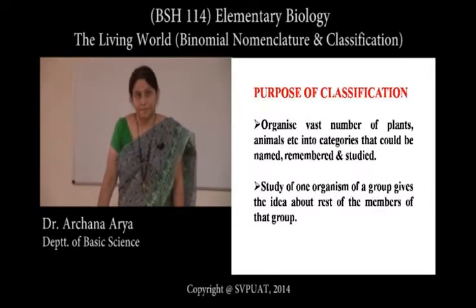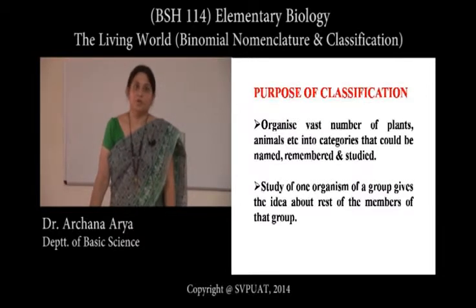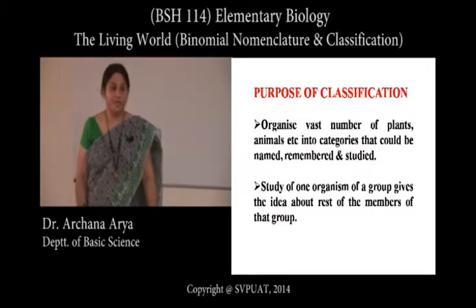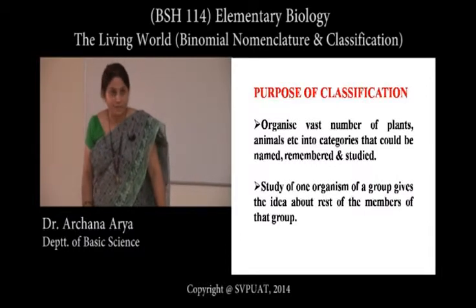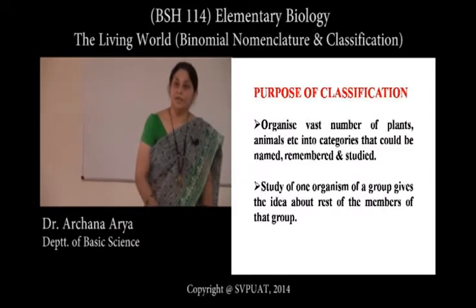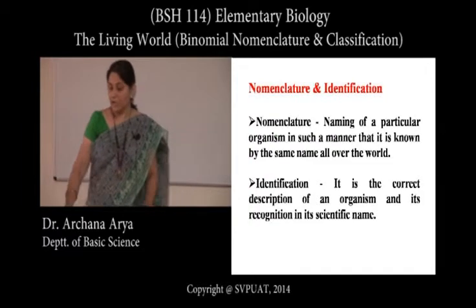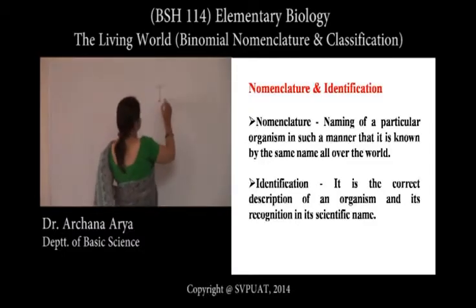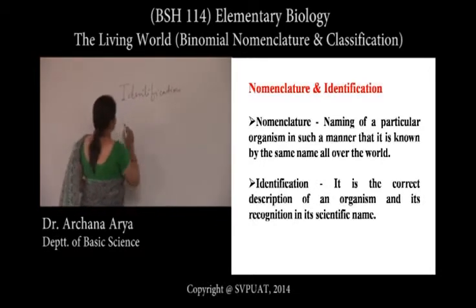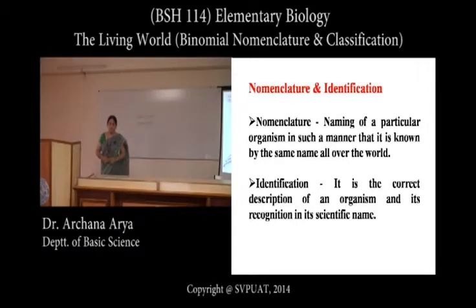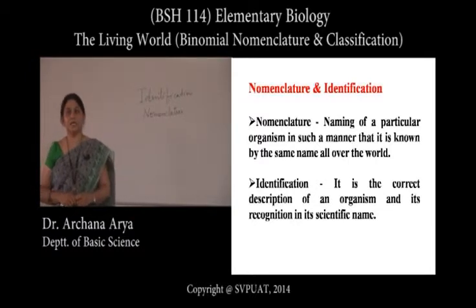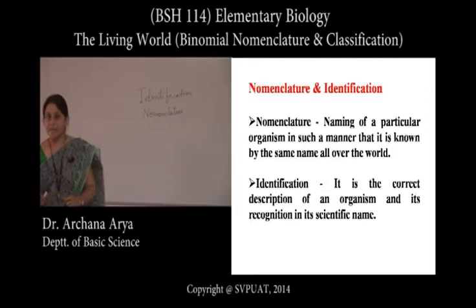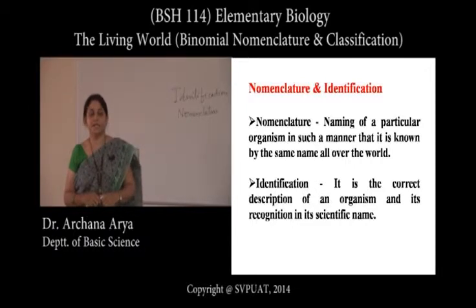How can we classify an organism until and unless we know about it? The first point is identification. Until and unless we can identify and describe something, how can we name it or classify it? Identification is describing an organism so that it can be named and then classified. So there are two things: first is identification, and the second is nomenclature — nomenclature means giving a name.